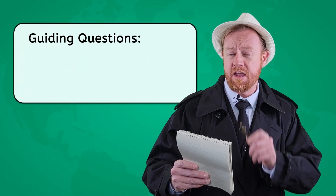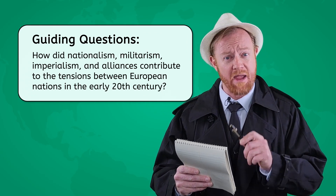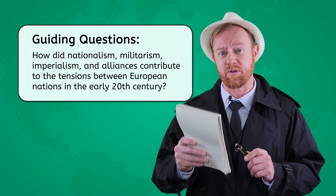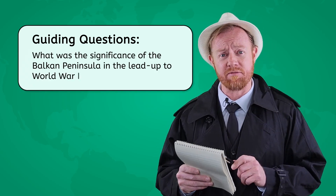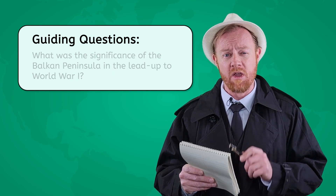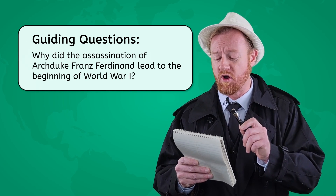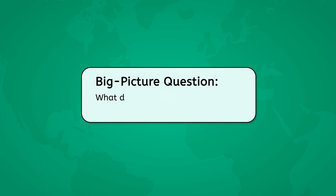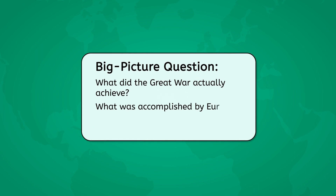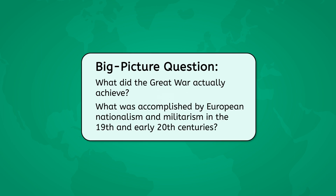We will use the following guiding questions to investigate our case. How did nationalism, militarism, imperialism, and alliances contribute to the tensions between European nations in the early 20th century? What was the significance of the Balkan Peninsula in the lead-up to World War I? Why did the assassination of Archduke Franz Ferdinand lead to the beginning of World War I? And as we uncover the big picture question for this unit: what did the Great War actually achieve? We'll start by examining what was accomplished by European nationalism and militarism in the 19th and early 20th centuries.